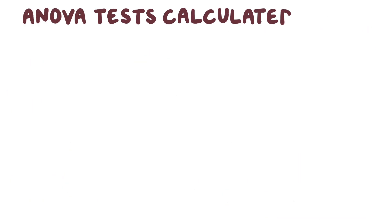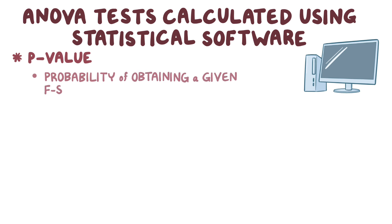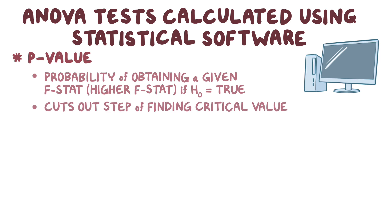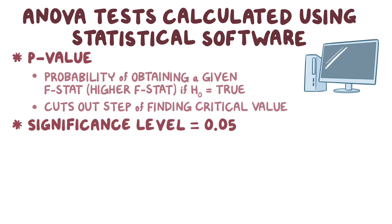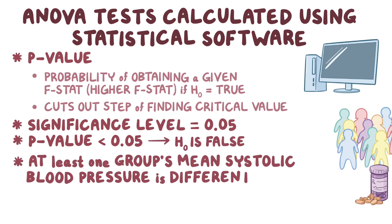ANOVA tests are most often calculated using statistical software, which will often provide a p-value. This p-value is the probability of getting a given F-stat, or a higher F-stat, if the null hypothesis is true. In short, the p-value cuts out the step of finding the critical value. So, if we use a significance level of 0.05, then a p-value of less than 0.05 indicates that the null hypothesis is false, and that at least one group's mean systolic blood pressure is different from the others.